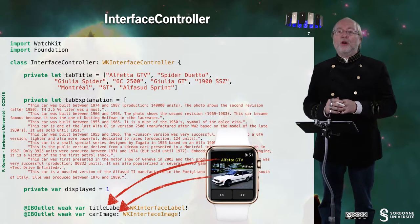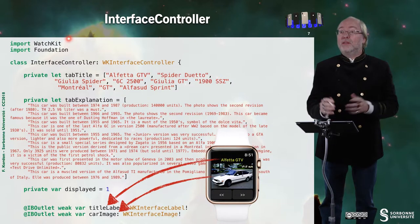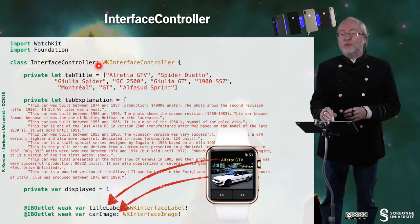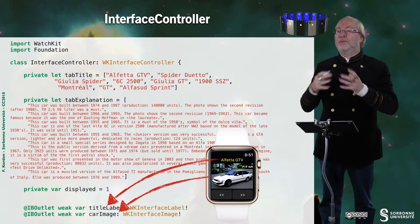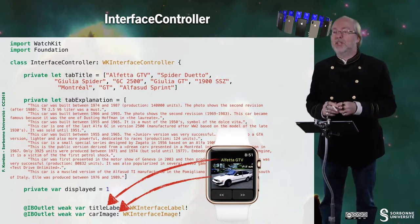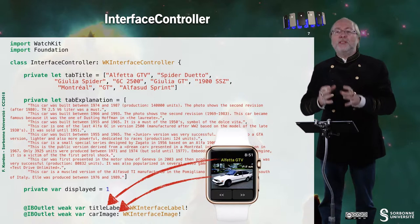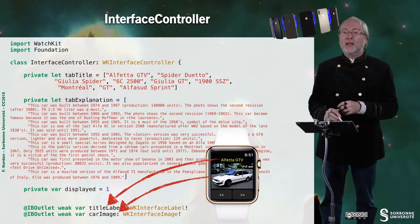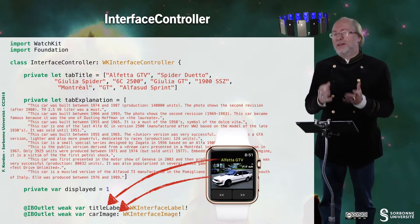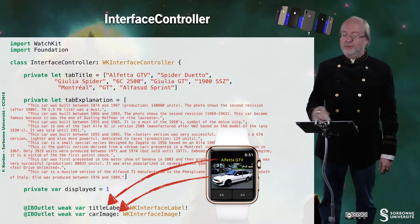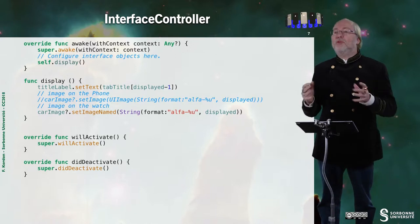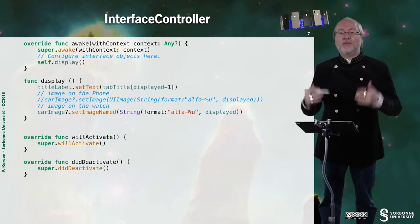Let's have a look at the interface controller. I import the WatchKit framework and the Foundation framework, and it inherits from WKInterfaceController. There is a static table with the list of vehicle names and another static table with explanations. I have a private variable showing the currently displayed element, initialized to one. I have two references to the storyboard elements — a label and a picture. The awakeWithContext function has no context to fetch; it just invokes a helper function called display.